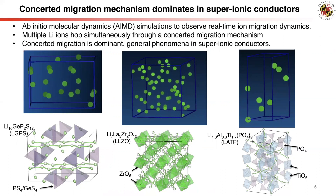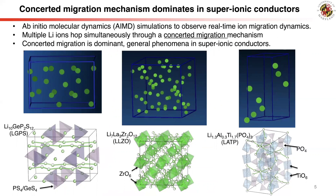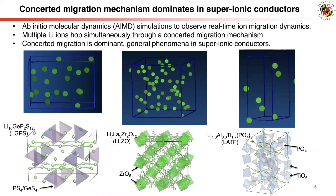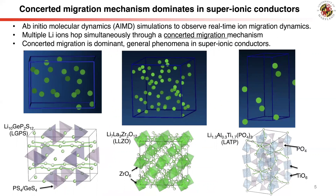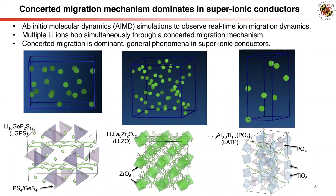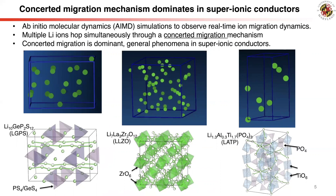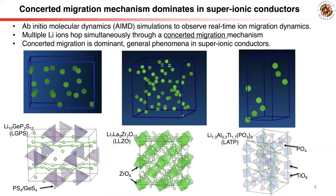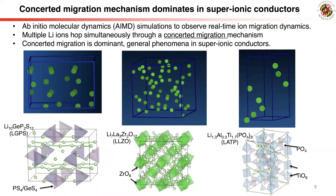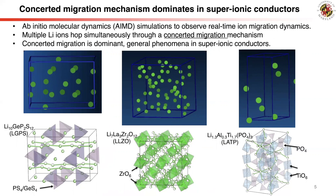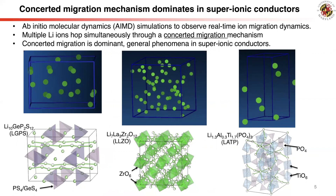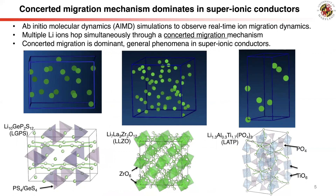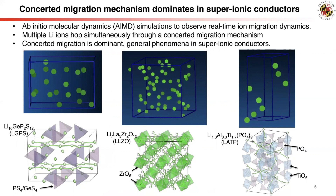We find that multiple lithium ions hop simultaneously through a concerted migration mechanism, instead of individual single-ion hopping. This concerted migration mechanism is a dominant and general phenomenon in all these superionic conductors.